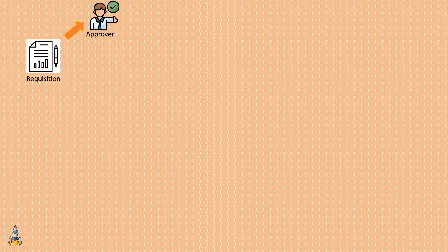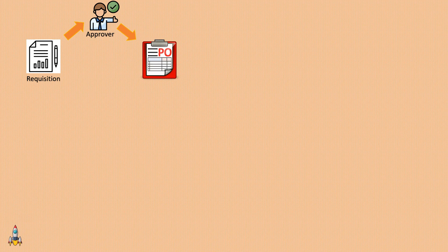If the approver approves the requisition, it becomes eligible to be sourced into a purchase order. With the help of a PeopleSoft delivered process, an approved requisition is sourced into something called a Purchase Order, or PO. The PO is the official document containing the details of the requirements and it will be sent to the supplier. Remember, a requisition is your company's internal document and will not be sent to the supplier, but the PO is the official order document sent to the supplier.